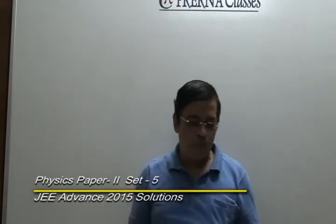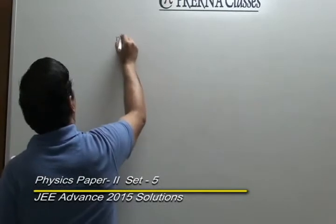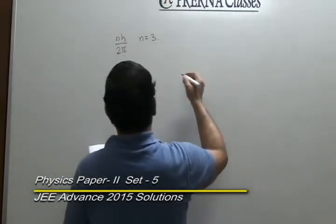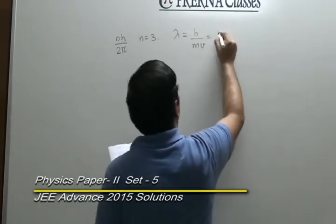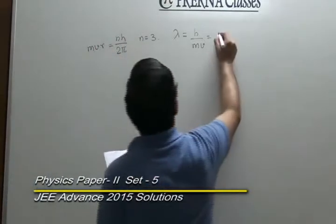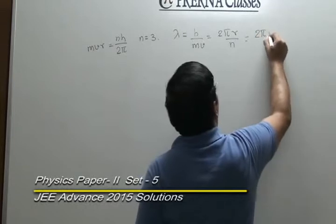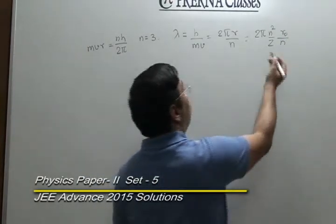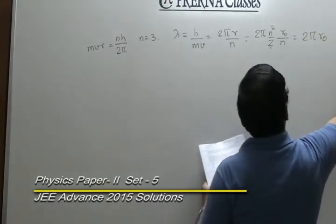The sixth question deals with the angular momentum of an electron in an excited state of Li²⁺. Angular momentum in any shell is nℏ = nh/2π. Given the value, n = 3. The de Broglie wavelength λ = h/mv = 2πR/n, where R = n²/Z · R₀. For Li²⁺, Z = 3, so all terms cancel and the result is 2πR₀, giving the variable P as 2.